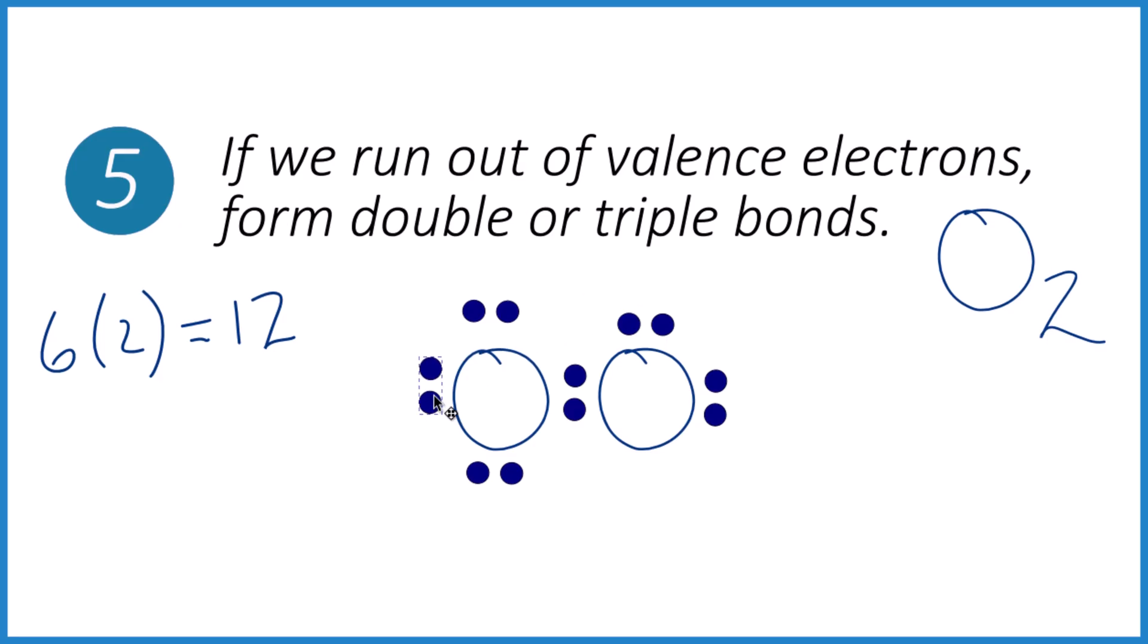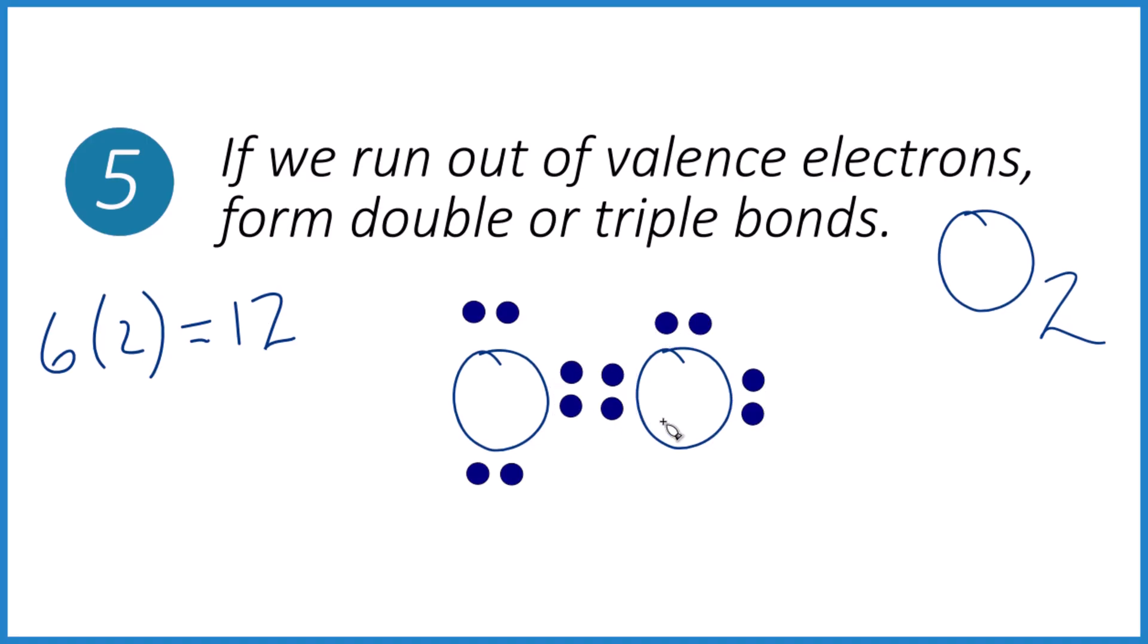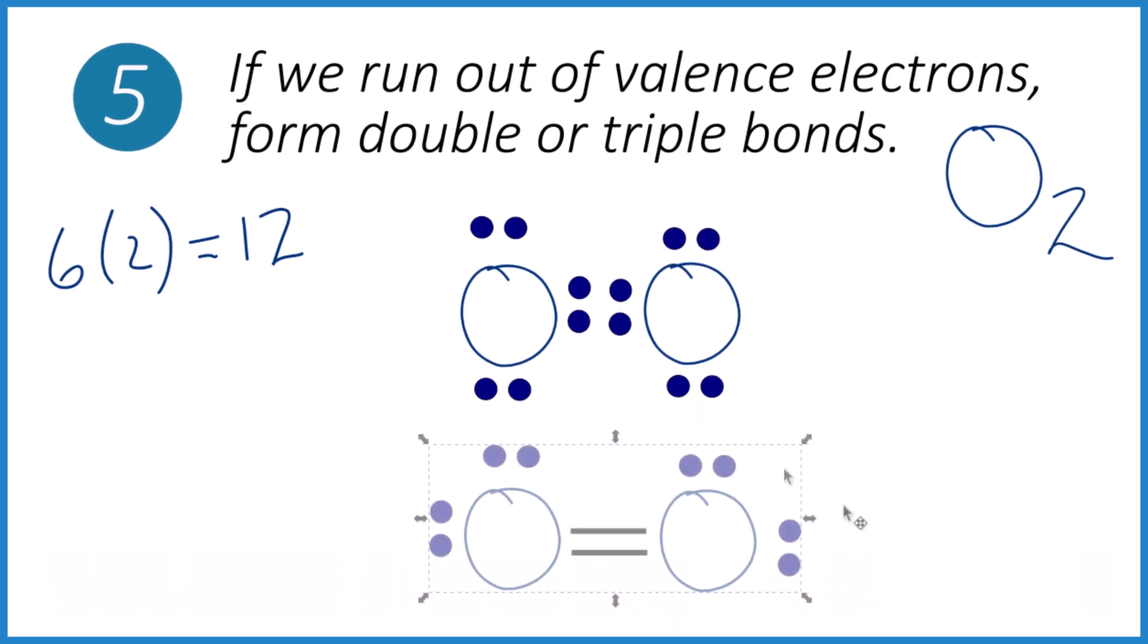We're going to take this pair of electrons and move it to the center. We're still using 12 valence electrons, but now we have eight here and we have eight here. An octet for both oxygens. We're done. That's the Lewis structure. And if you like symmetry, you could do that. And we could also represent this by drawing two lines to represent these two pair of valence electrons.